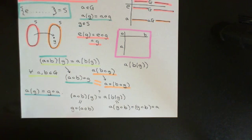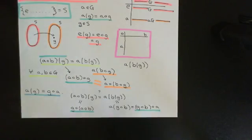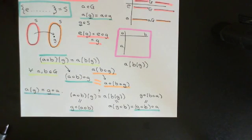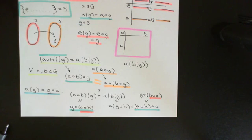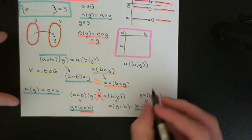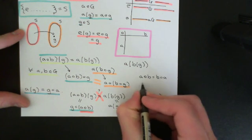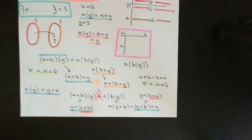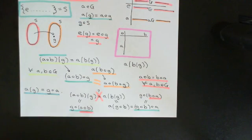Now you'll notice there's a problem: we've swapped the order of a and b. We can still apply associativity and write this as g∘(b∘a), but we still have a problem because b∘a is not necessarily equal to a∘b. So it's no longer true that these two expressions are necessarily equal to each other. For them to be equal, we'd need a∘b to equal b∘a for all a and b in the group — meaning we'd need the group to be abelian, i.e., the composition law to be commutative.